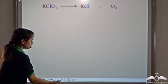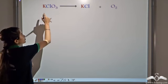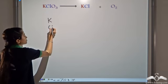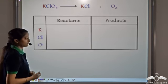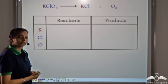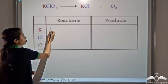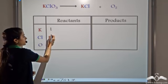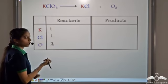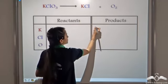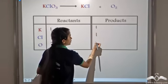Let's write the atoms that we have: Potassium, Chlorine, and Oxygen. Now let's count the number of atoms on both the reactant and the product side. On the reactant side, Potassium we have 1 atom, Chlorine we have 1 atom, and Oxygen we have 3 atoms. On the product side, we have 1 atom of Potassium, 1 atom of Chlorine, and 2 atoms of Oxygen.